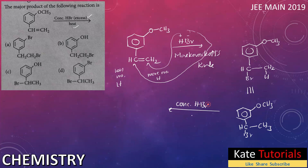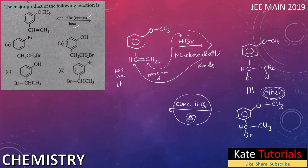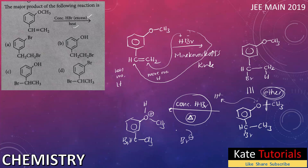But they also added concentrated HBr and heated it, which brings in a second concept. The molecule now contains an ether group — the benzene ring with O-CH3 is an ether (R-O-R). When concentrated HBr is added to an ether, H+ attacks the oxygen's lone pairs, giving the oxygen a positive charge, and Br minus is generated.